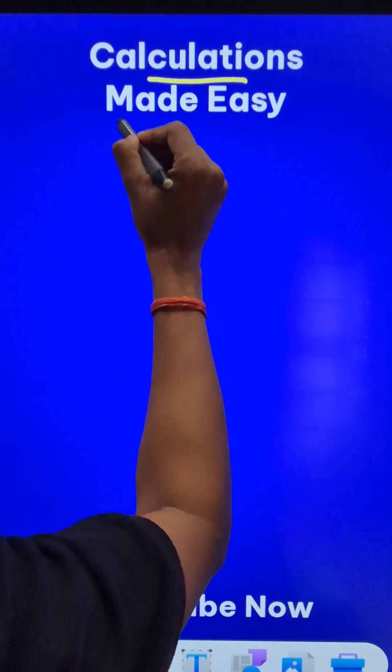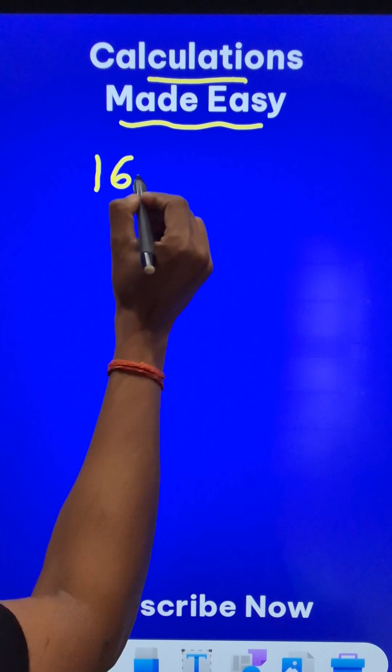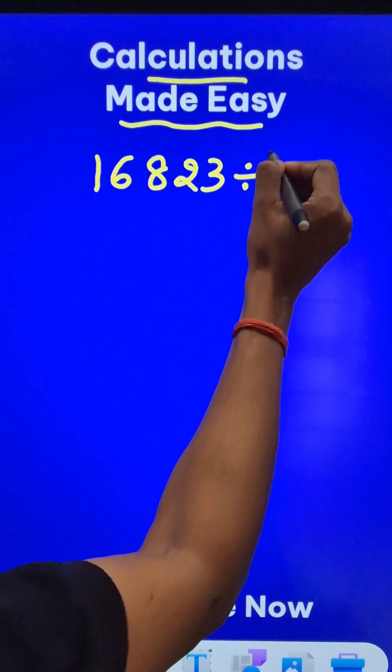Some division problems can be done very easily. Just like a 5-digit number like 16823 to be divided by a 2-digit number like 76.